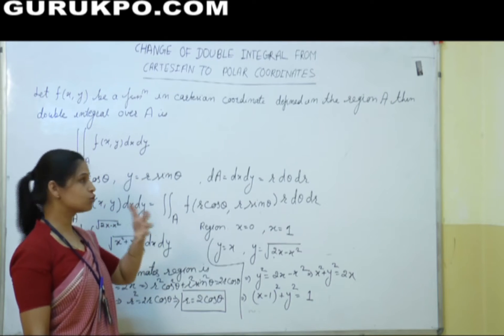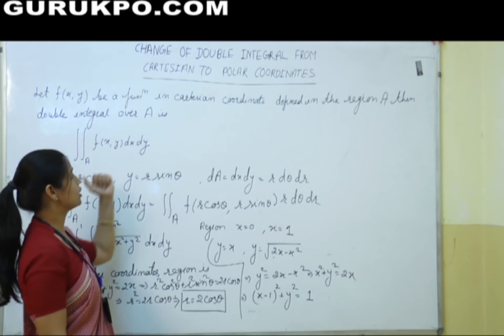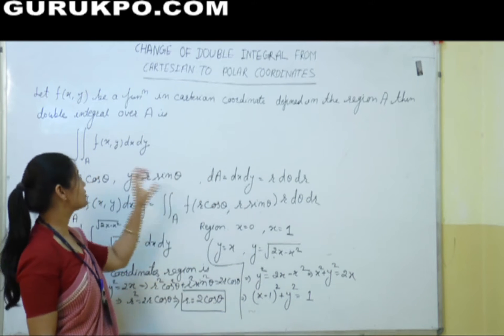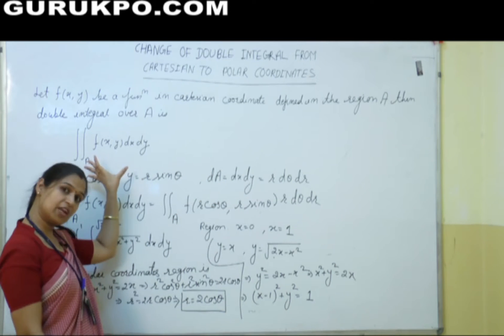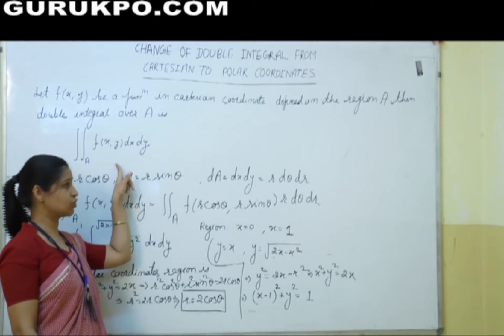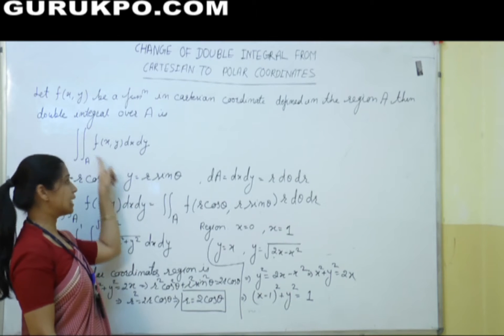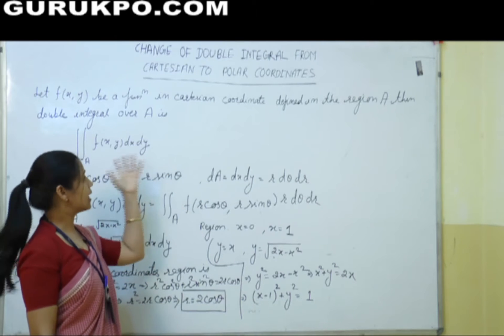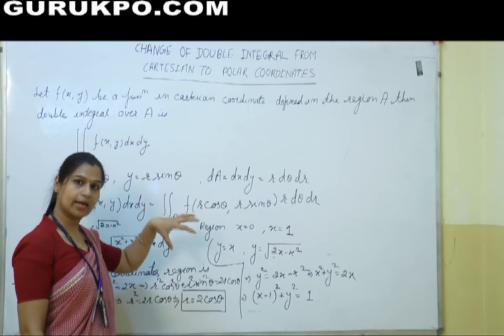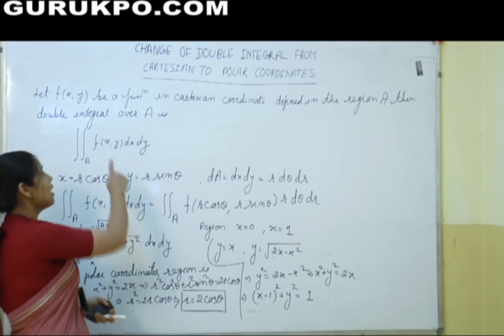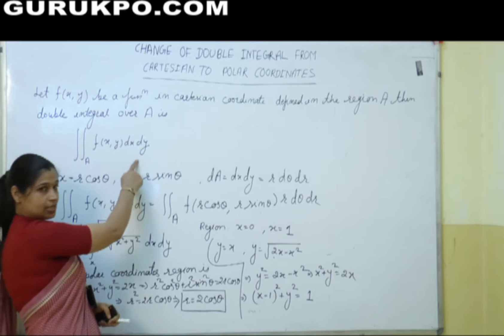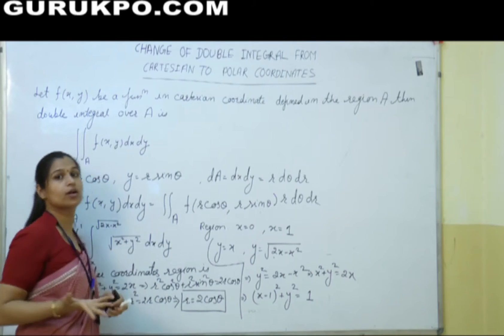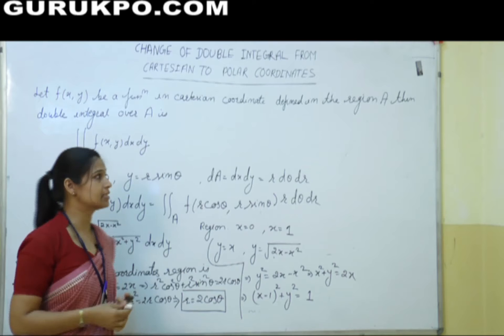Now we want to convert this double integration into polar coordinates, because sometimes it is very difficult to solve this double integration in Cartesian form, and when we convert this into polar form, then it becomes very easy. How can you change it?